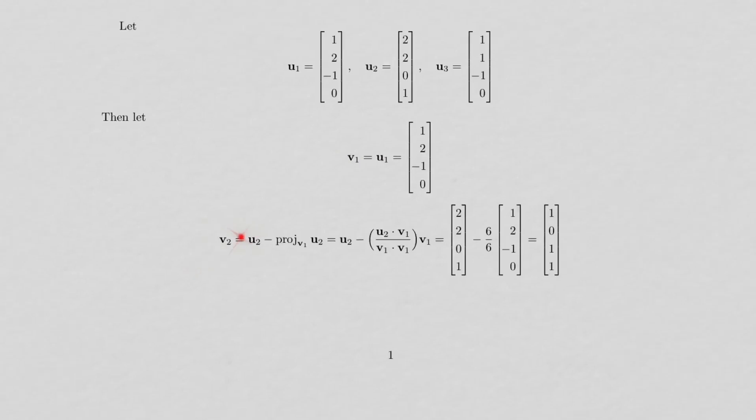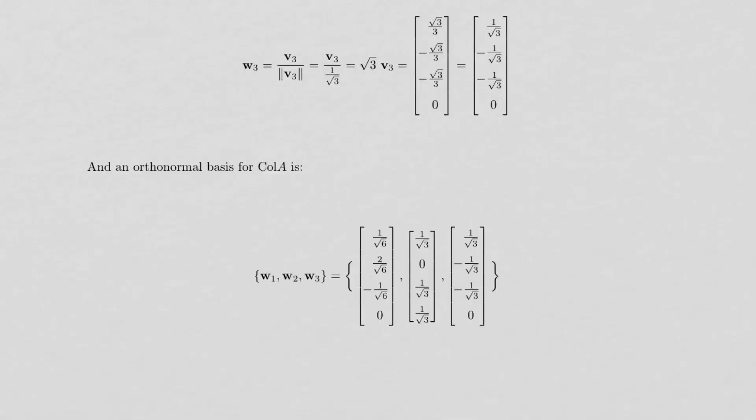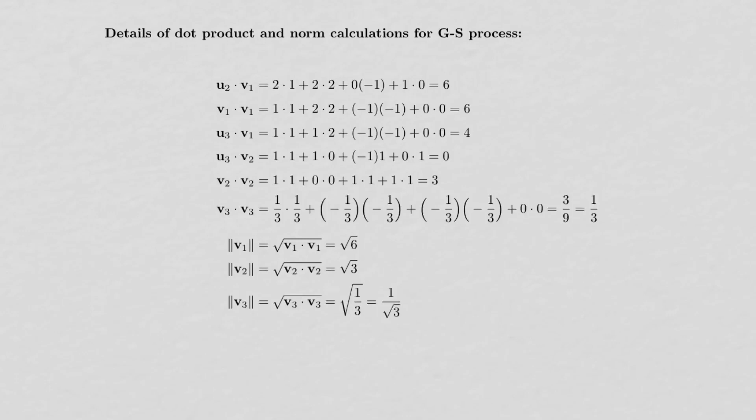I'm going to take u2 and subtract from it the orthogonal projection of u2 onto v1. Here's the formula for it in the Euclidean inner product space where the inner product is a dot product. So I've got u2 here. The dot products here.